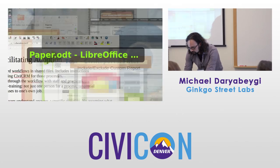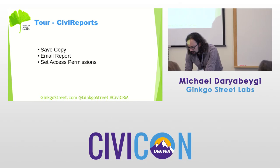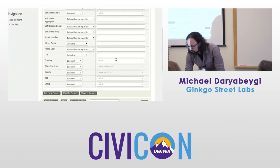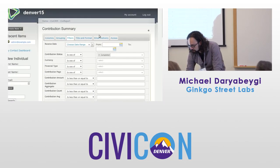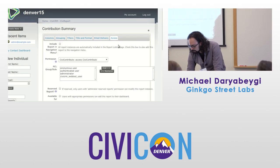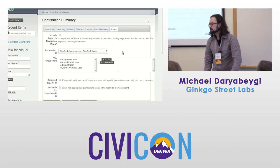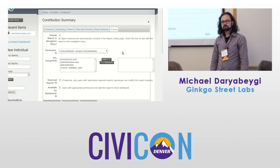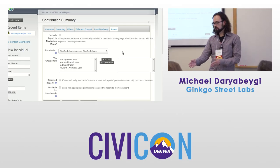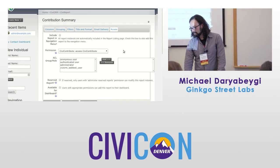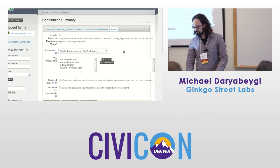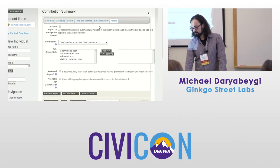We already covered email delivery. You can also configure access — if you have sensitive data or want to give certain people access to data but don't want them to see all your financials, you have this option on the access tab. Permissions is a deeper topic outside the scope of this session, but you can definitely find support on configuring those.